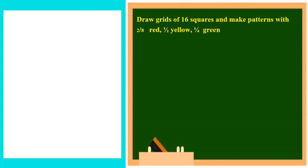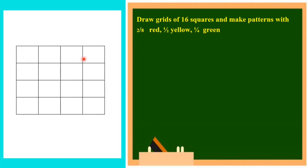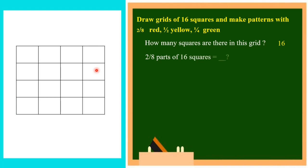Now there will be a question and you have to color the grid as per the given amount: 2 by 8 red, half of the portion yellow, and 1 by 4 of the portion green. There are totally 16 squares. For 2 by 8: take 2 squares as 1 part, making 8 parts total — so 2 parts means 4 squares should be colored red. Half of 16 squares means 8 squares for yellow. And 1 by 4 of 16 squares means 4 squares for green.